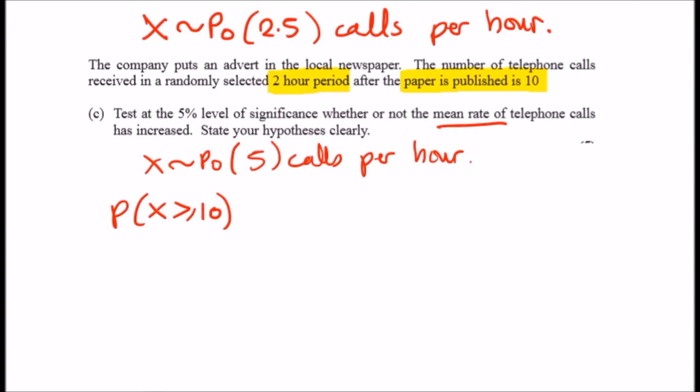But we also need to state our hypothesis clearly. Before we even do this, we can say let the null hypothesis and the alternative hypothesis be represented by the mean rate equaling 5, or if the mean rate has increased, so it'll be greater than 5.